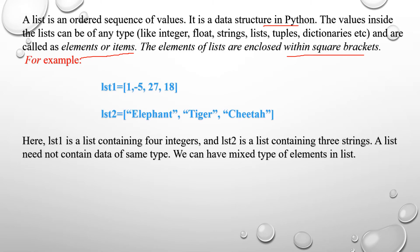For example, list1 is equal to [1, -5, 27, 18] — these are all integer values. And list2 is assigned strings: elephant, tiger, and cheetah. list1 is a list containing four integers: 1, -5, 27, and 18. list2 is a list containing three strings: elephant, tiger, and cheetah.